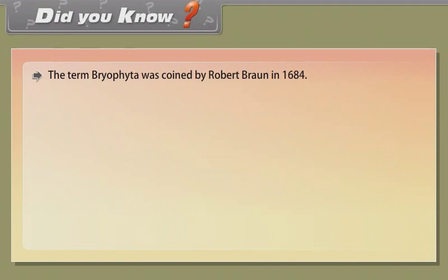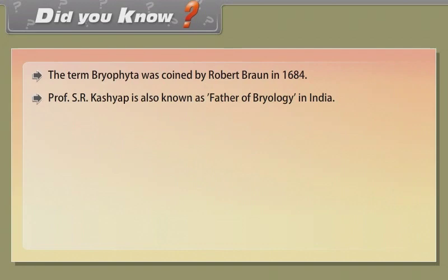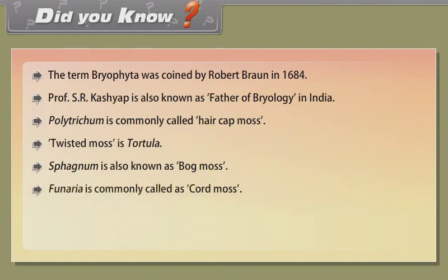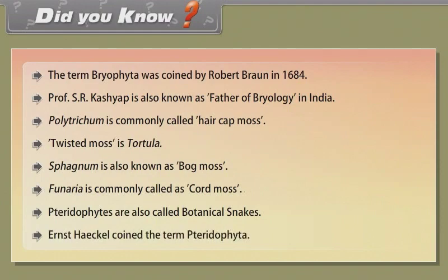Did you know: The term bryophyte was coined by Robert Braun in 1684. Professor S.R. Kashyap is also known as father of bryology in India. Polytrichum is commonly called hair cap moss. Twisted moss is tortula. Sphagnum is also known as bog moss. Funaria is commonly called as cord moss. Pteridophytes are also called botanical snakes. Ernst Haeckel coined the term pteridophyta.